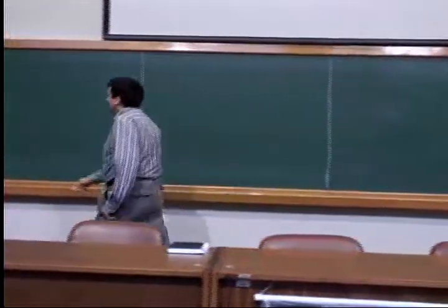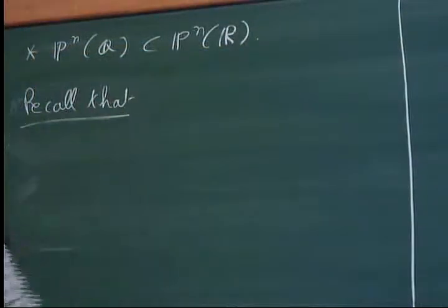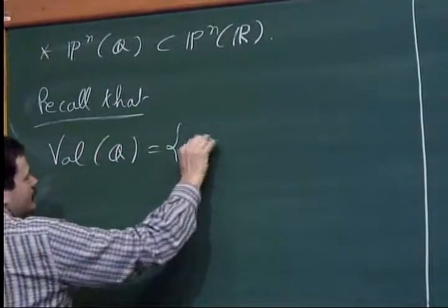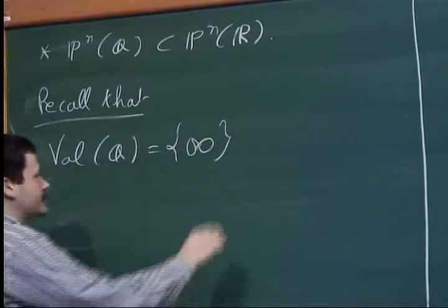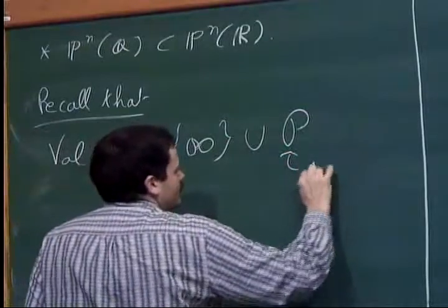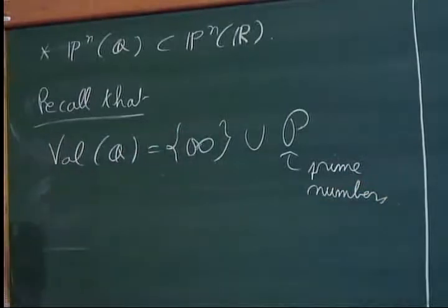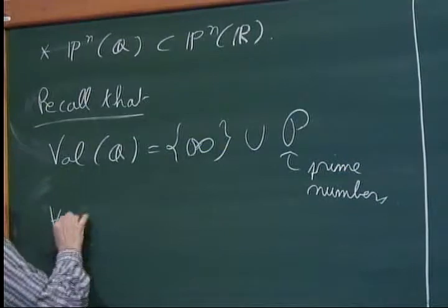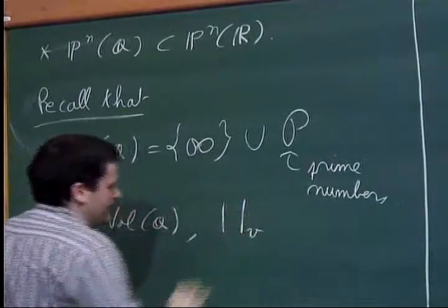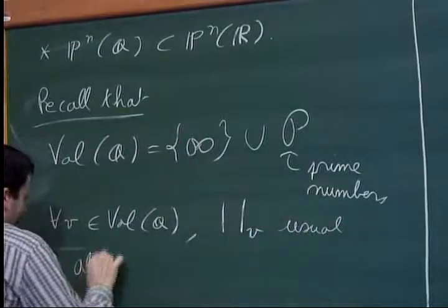Let me first recall that we have the set of places of Q, which I may describe as the Archimedean places, and then all the finite places. So P is a set of prime numbers. And for any V in the set of places, I denote by this the usual absolute value corresponding to V.